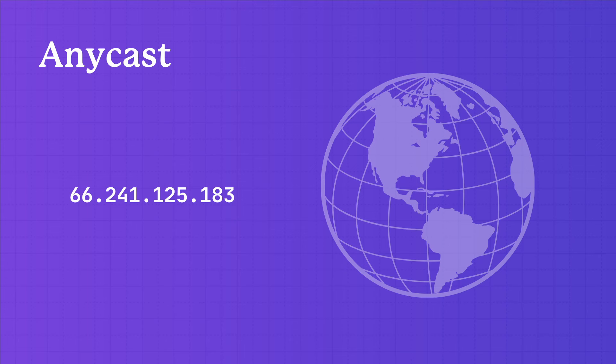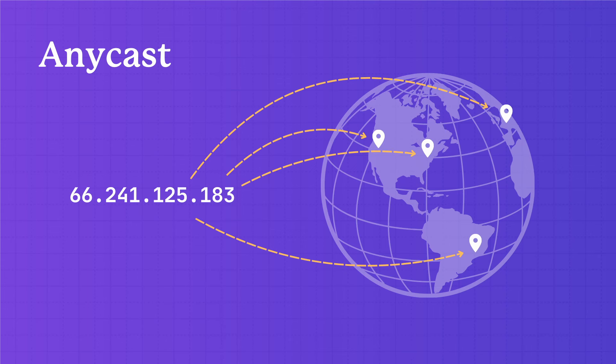Anycast is what allows you to use the same IP for multiple servers. Think of an anycast IP kind of like a Taco Bell franchise. There are Taco Bells all over the world and they're all called Taco Bell — but how do I know which Taco Bell is closest to me? To understand this, we need to talk about Border Gateway Protocol.